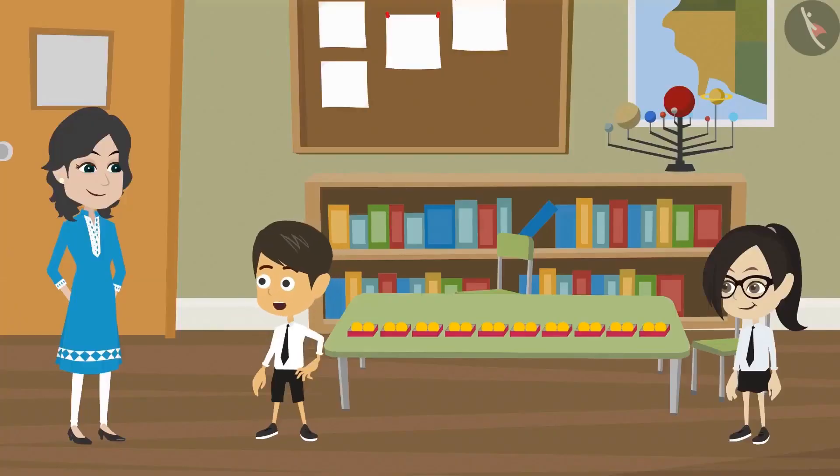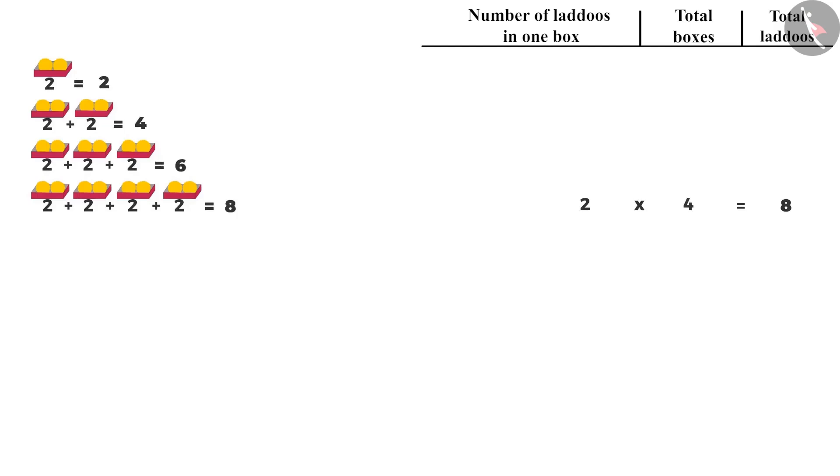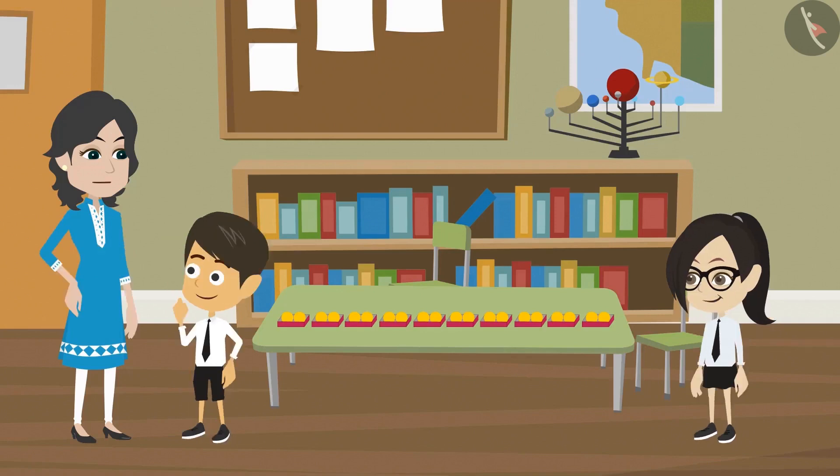That means if you multiply 2 by 10, will the answer be the same if you add 2, 10 times? Yes, Reyanj. In the same way, you can convert the above additions into multiplication. If you want to find the ladoos in 3 boxes, multiply 2 by 3. Similarly, for 2 boxes, multiply 2 by 2. And to find the ladoos in 1 box, multiply 2 by 1. That means we don't need to add them.